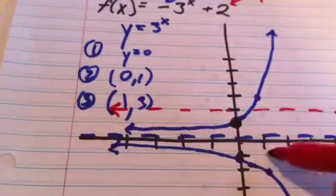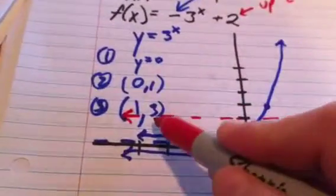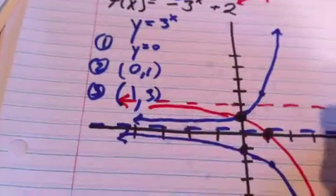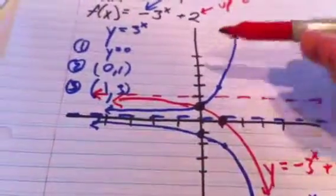And this point (1, 2) ends up there. So now, connecting those dots, that red graph is the final graph of y equals negative 3 to the x plus 2. You took the normal graph, flipped it over, shifted it up 2.